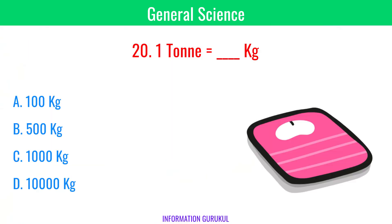1 tonne is equal to how many kg? 1,000 kg.